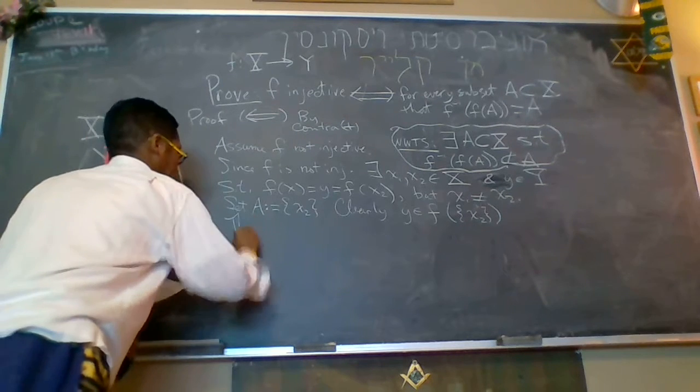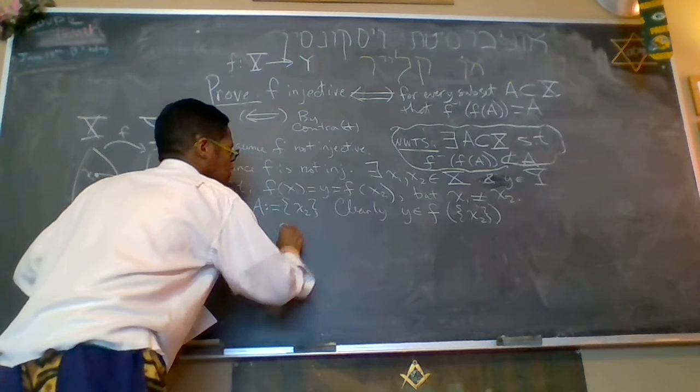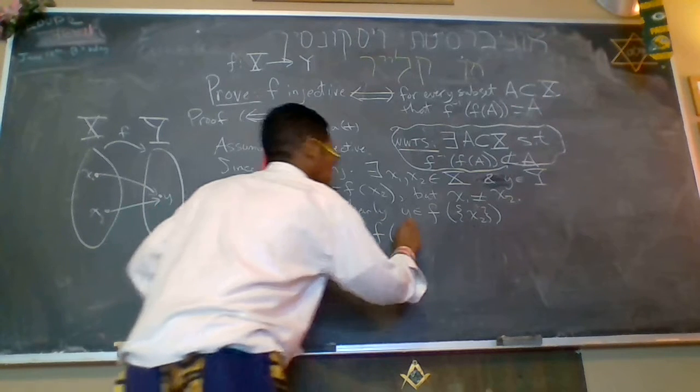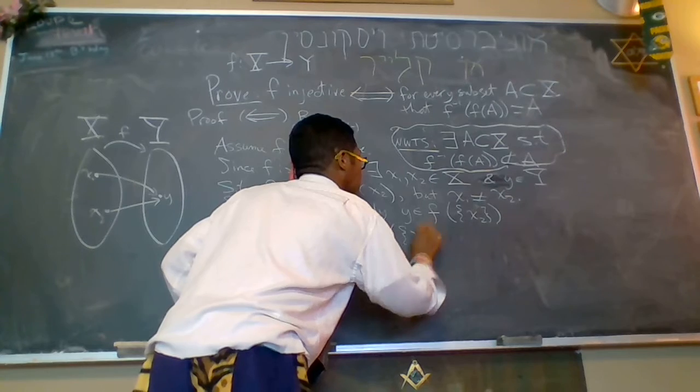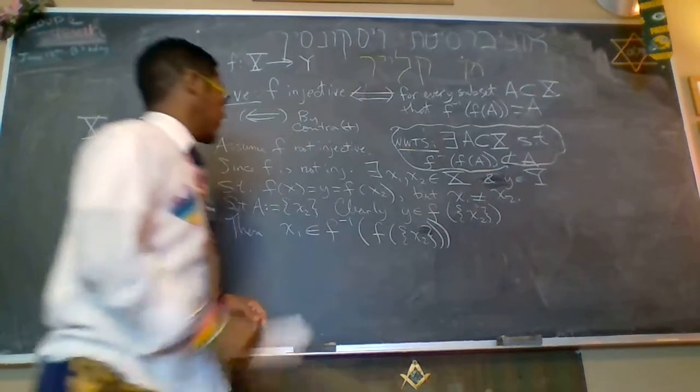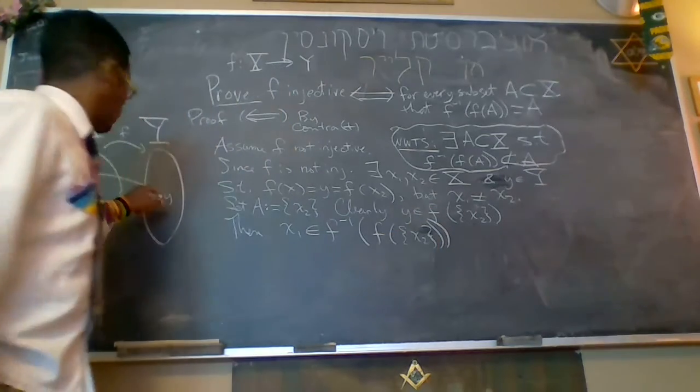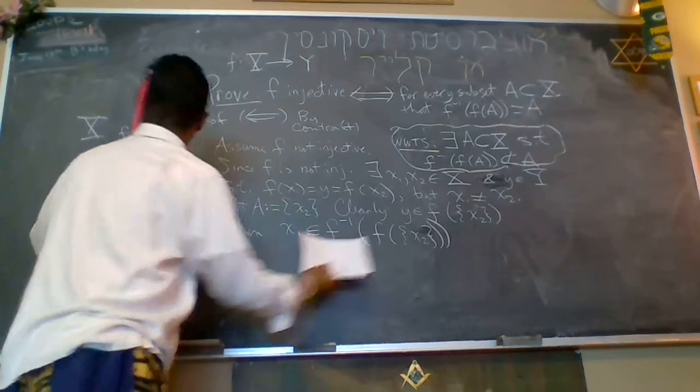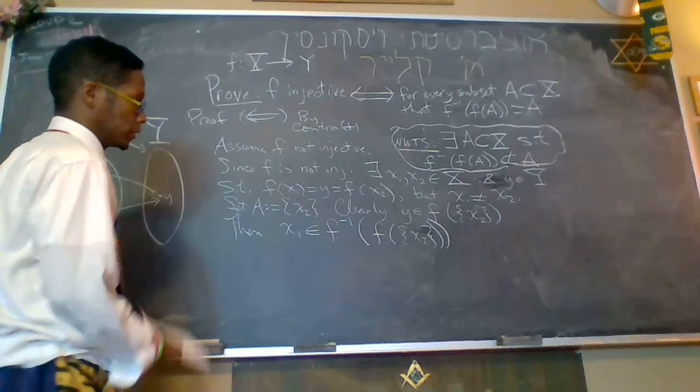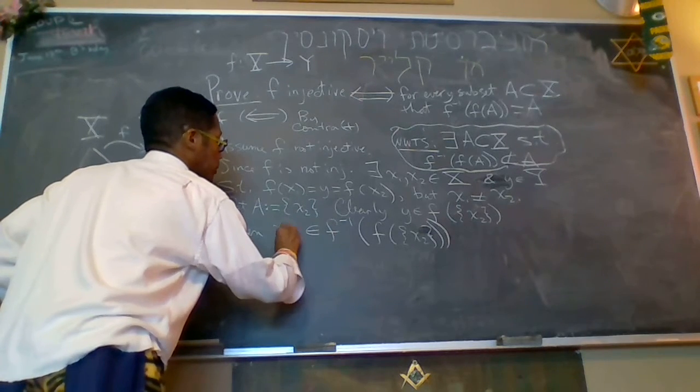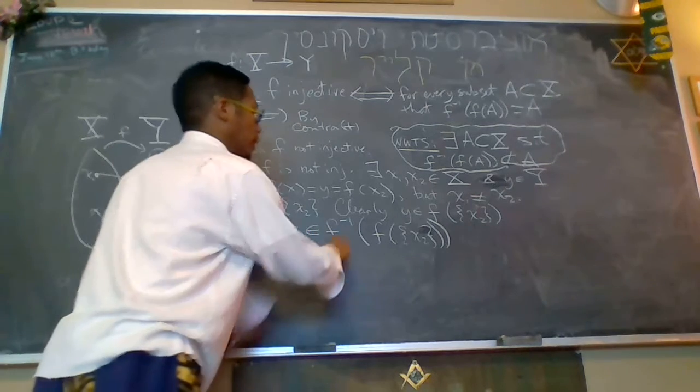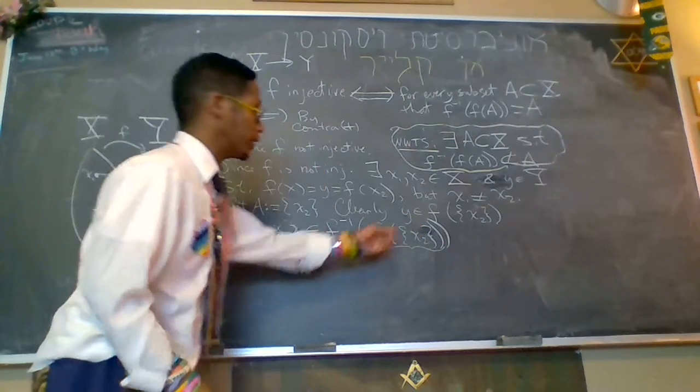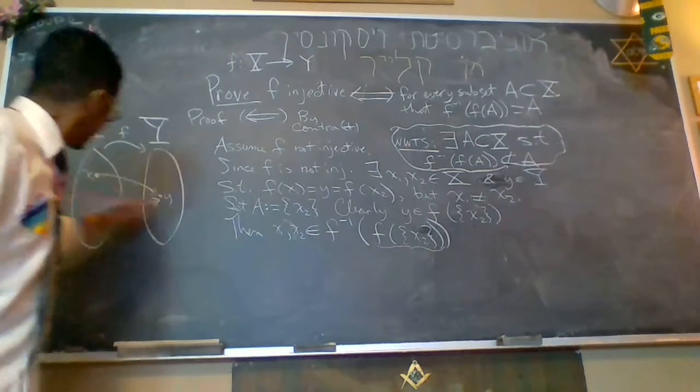So then x1 is an element of the inverse image of the image of the set containing x2. Okay. So if y is inside this image, y is in this image, then the inverse image of something that has y is definitely x1. In fact, it's also x2. So I can say clearly that x1 and x2 are both in the preimage of this set. Because this set has y in it. In fact, y is the only thing in that set. So in the preimage of y, we can see it's x1 and x2.